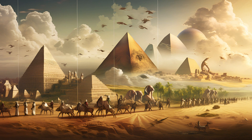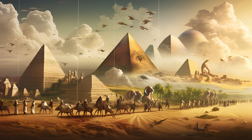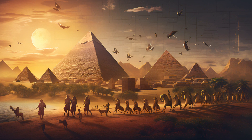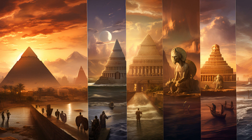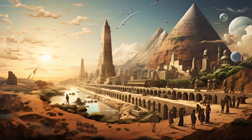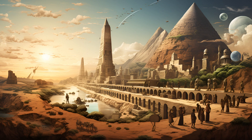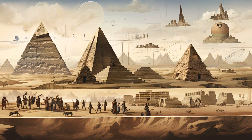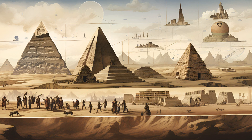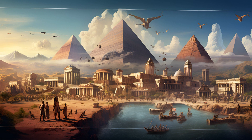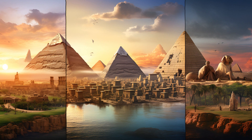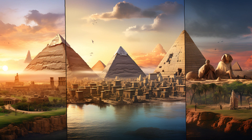Around 2000 BCE, the Xia Dynasty marks the beginning of Chinese dynastic rule. Though its historical existence remains debated, it is traditionally considered the first Chinese dynasty—shrouded in legend, with figures like Emperor Yu credited with taming floods and establishing orderly governance. Following the Xia Dynasty, the Shang Dynasty emerged around 1600 BCE, renowned for its advancements in writing, bronze technology, and elaborate rituals. The discovery of oracle bones—used for divination and recording questions to deities—provides invaluable insights into Shang governance, social structure, and belief systems.